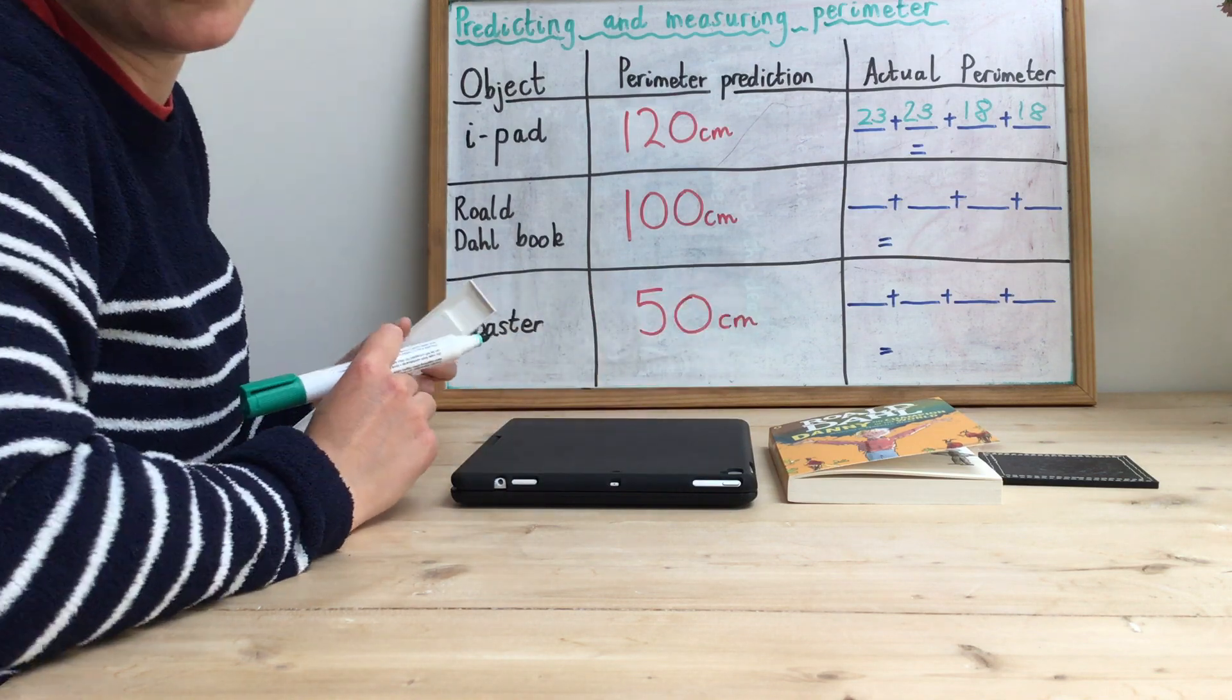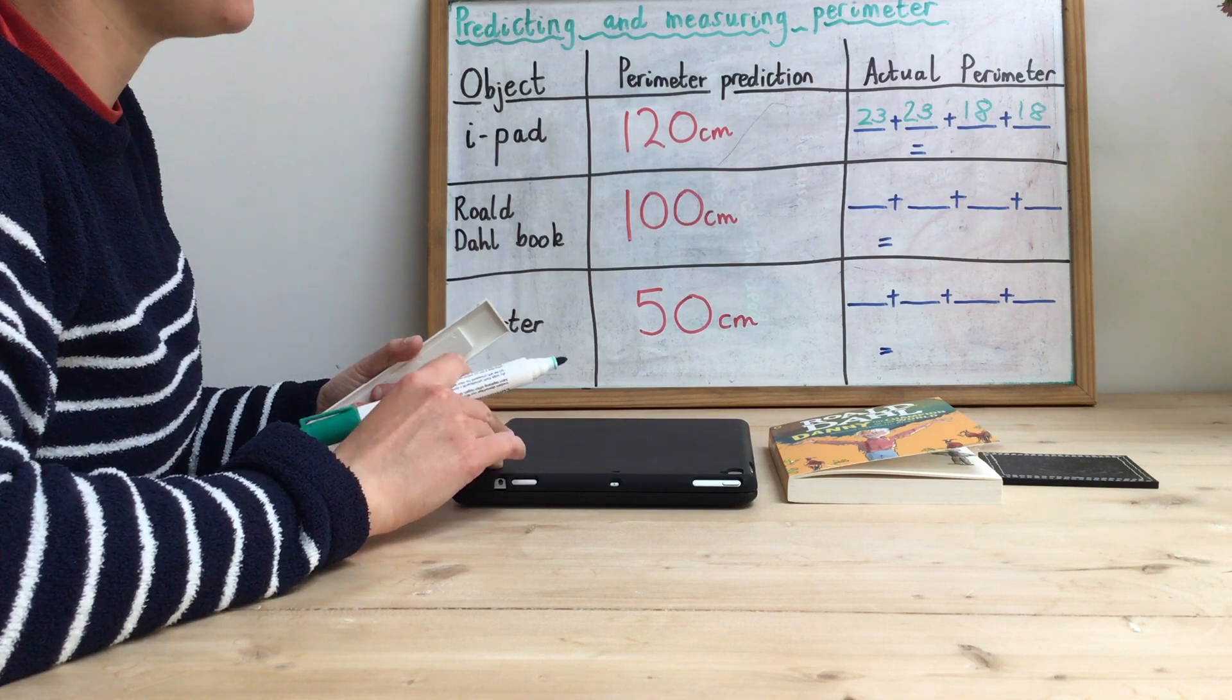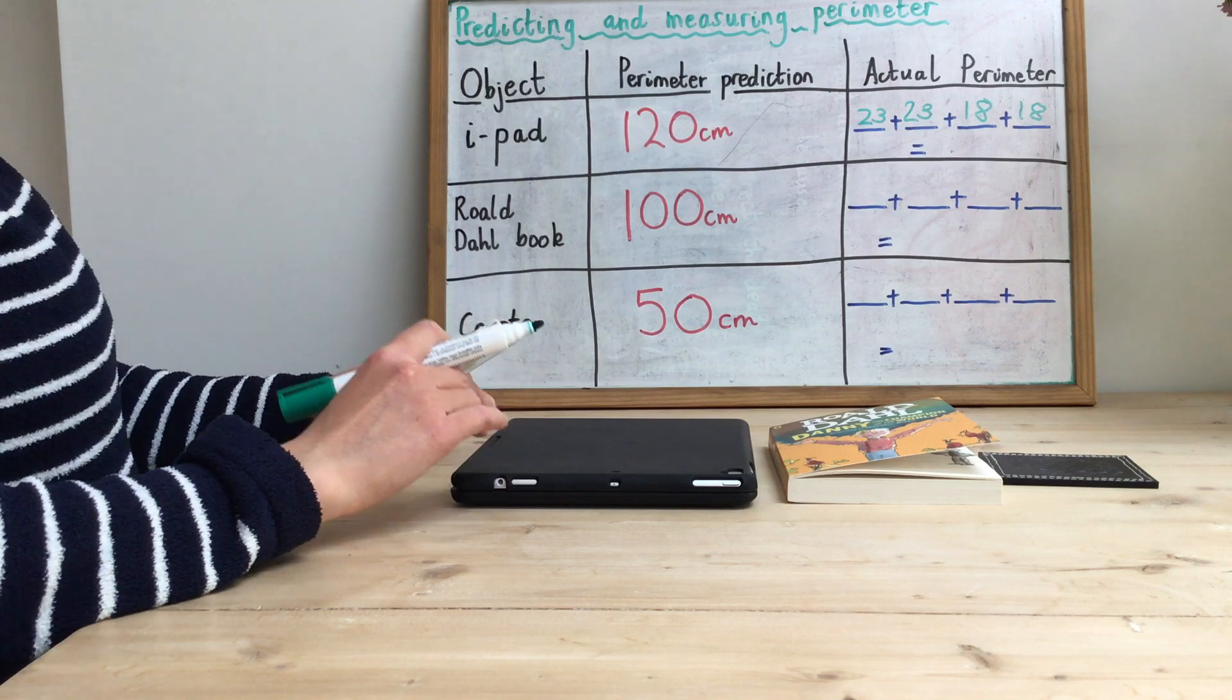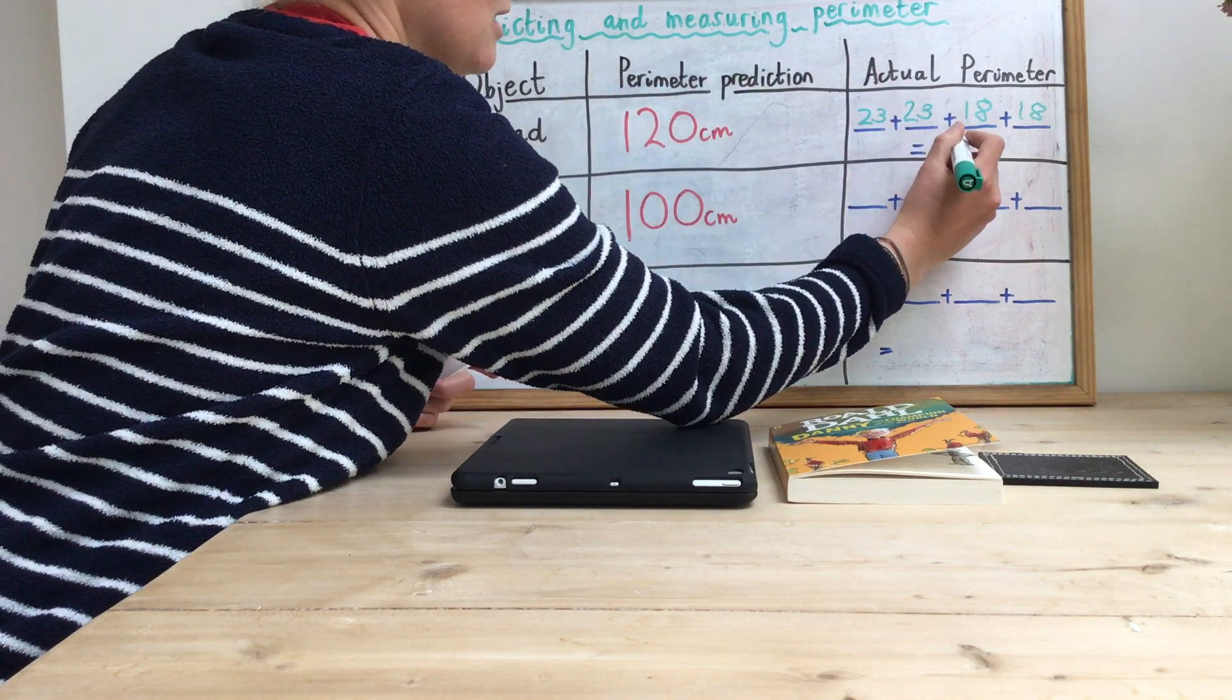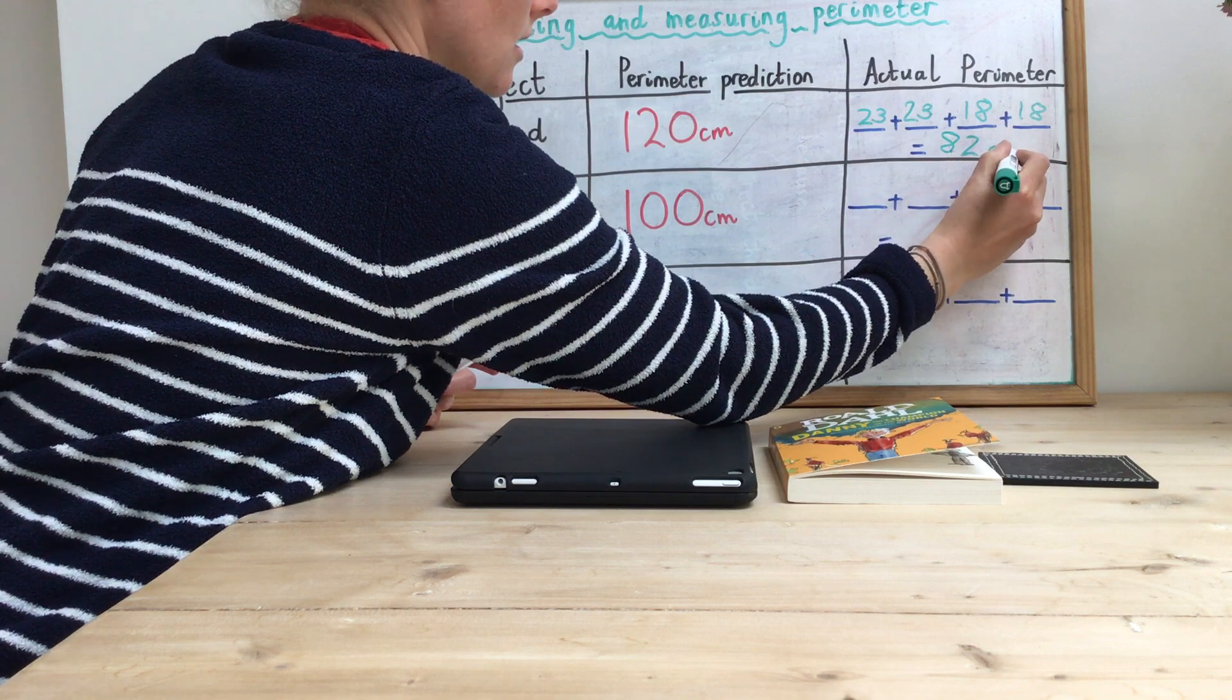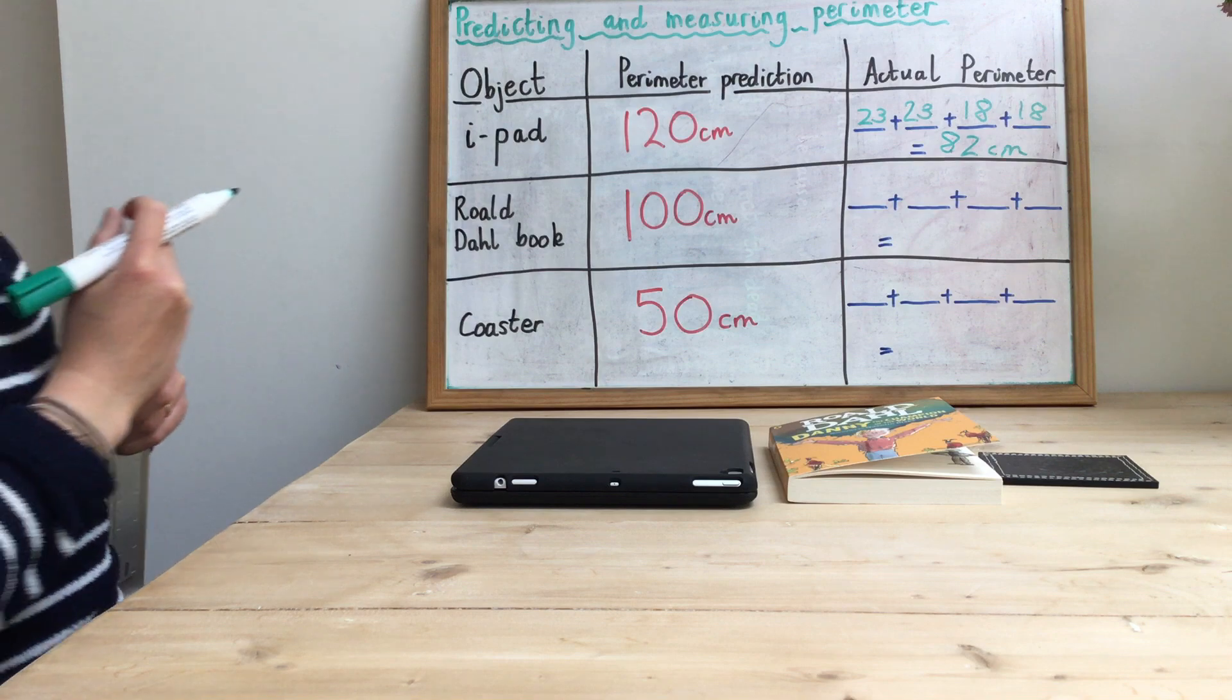So you might want to use column addition for this. I can do this one in my head. I know that 23 plus 23 plus 18 plus another 18 is 82 centimeters. So the perimeter of my iPad is 82 centimeters.